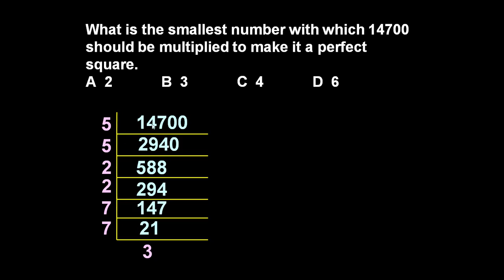So now we got various factors of 14700. The factors of 14700 are 5, 5, 2, 2, 7, 7, and 3. It means if we multiply all these, we will get 14700.